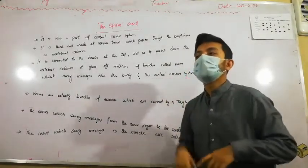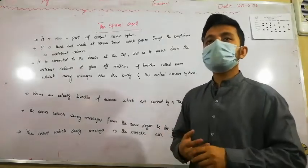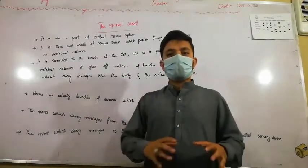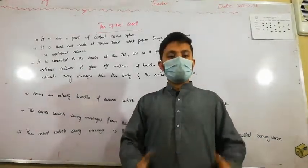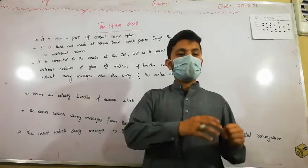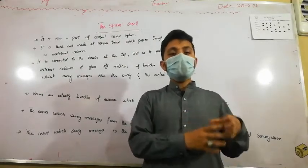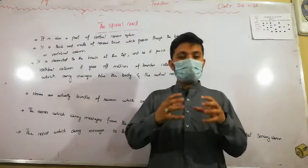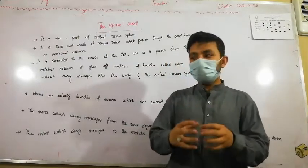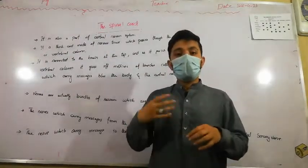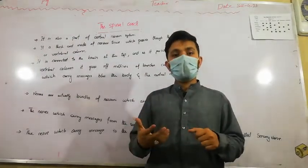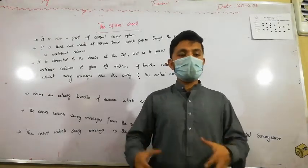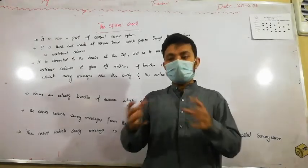We have two types of nerves. Sensory nerves are those nerves that transfer messages from the sensory organs to the central nervous system. We have sensory organs which transfer the message to the central nervous system.